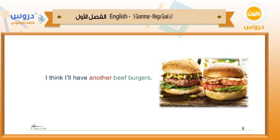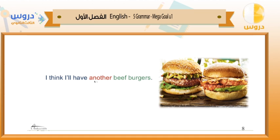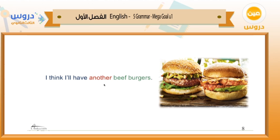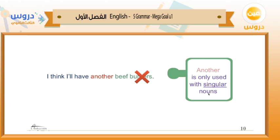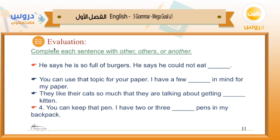Now look at this sentence: 'I think I'll have another beef burgers.' What do you notice? 'Another' here is used as an adjective before a noun, but is it correct to use 'another' with a plural noun? Of course not. The correct form is 'I think I'll have another beef burger.' So 'another' is only used with singular nouns. We can say 'other beef burgers,' but not 'another beef burgers.'